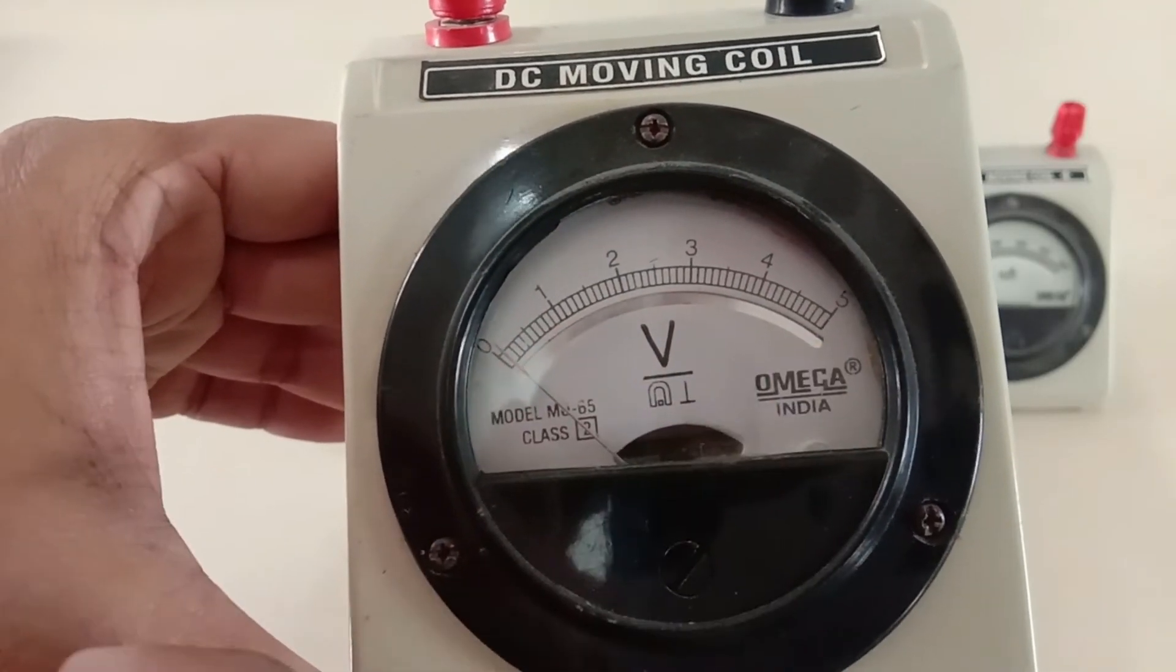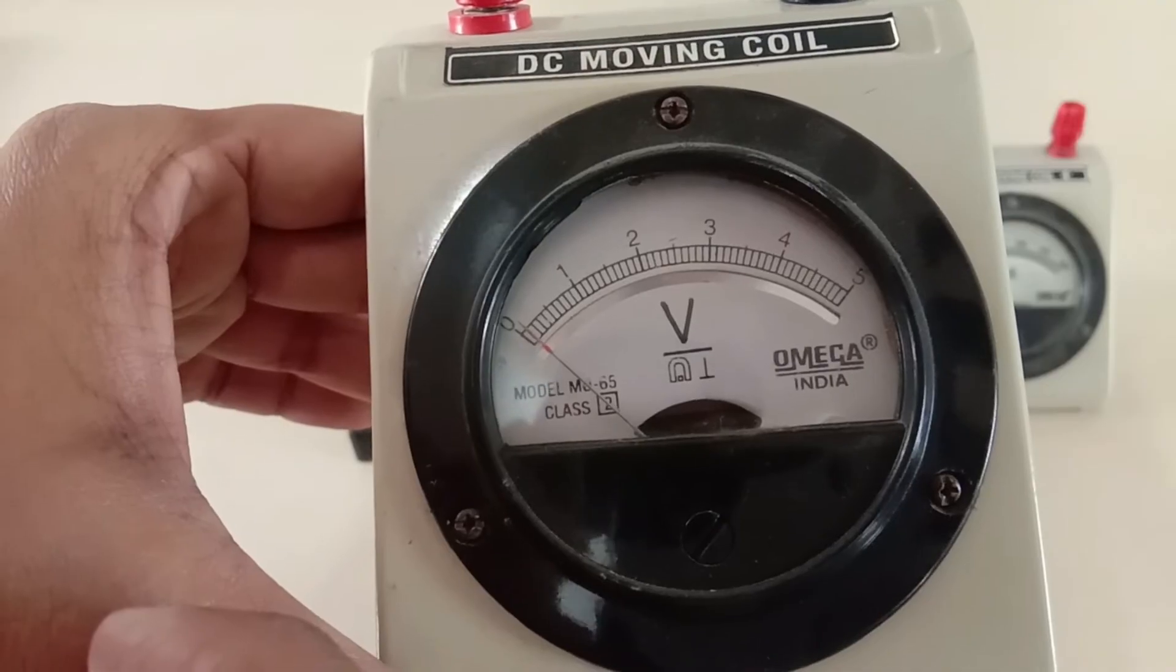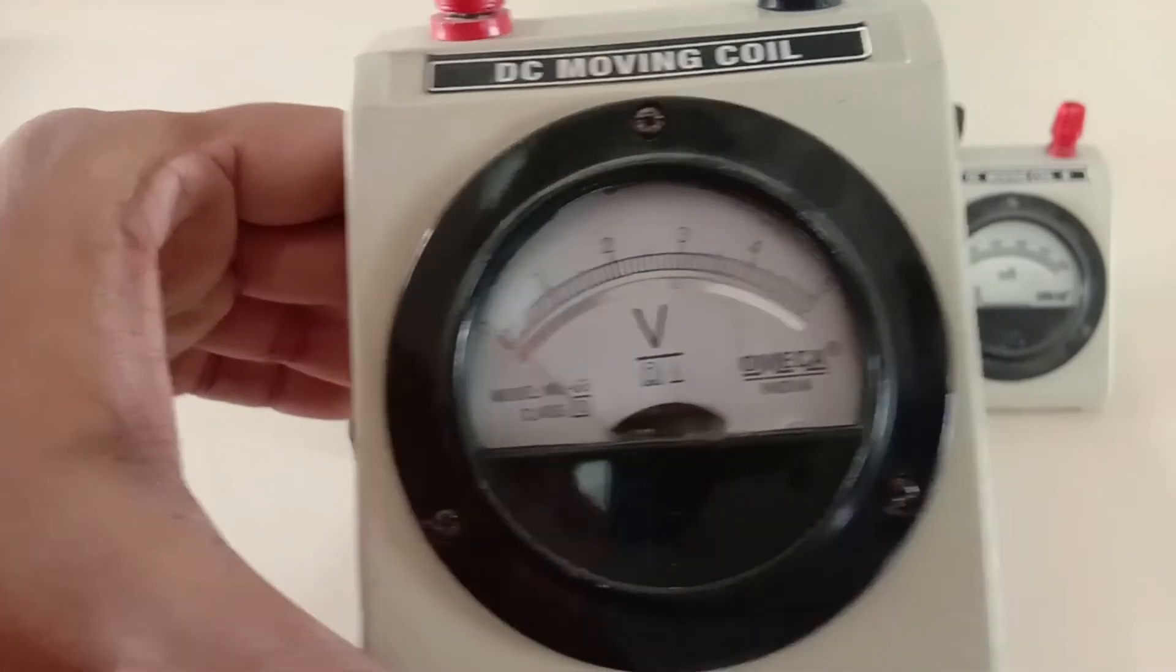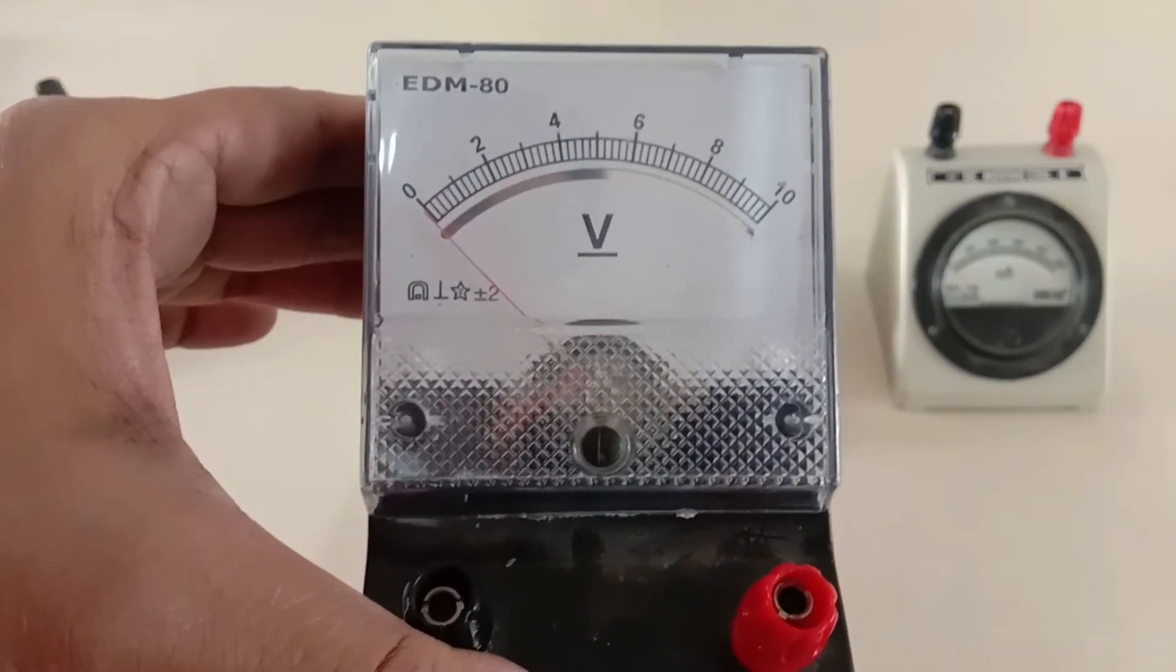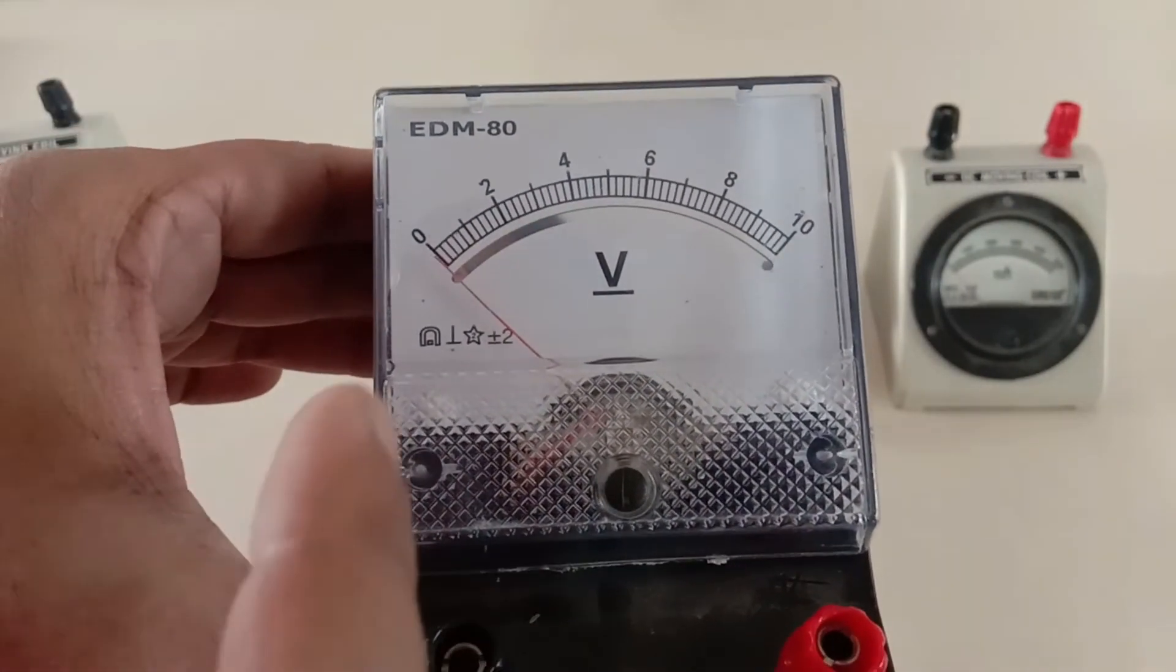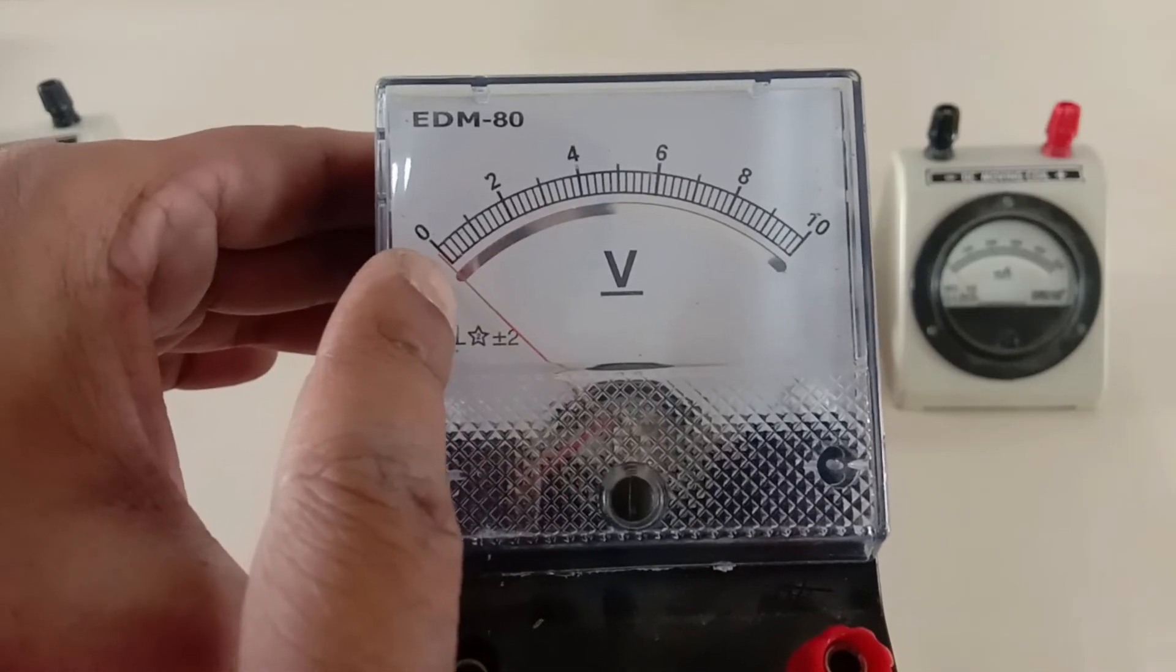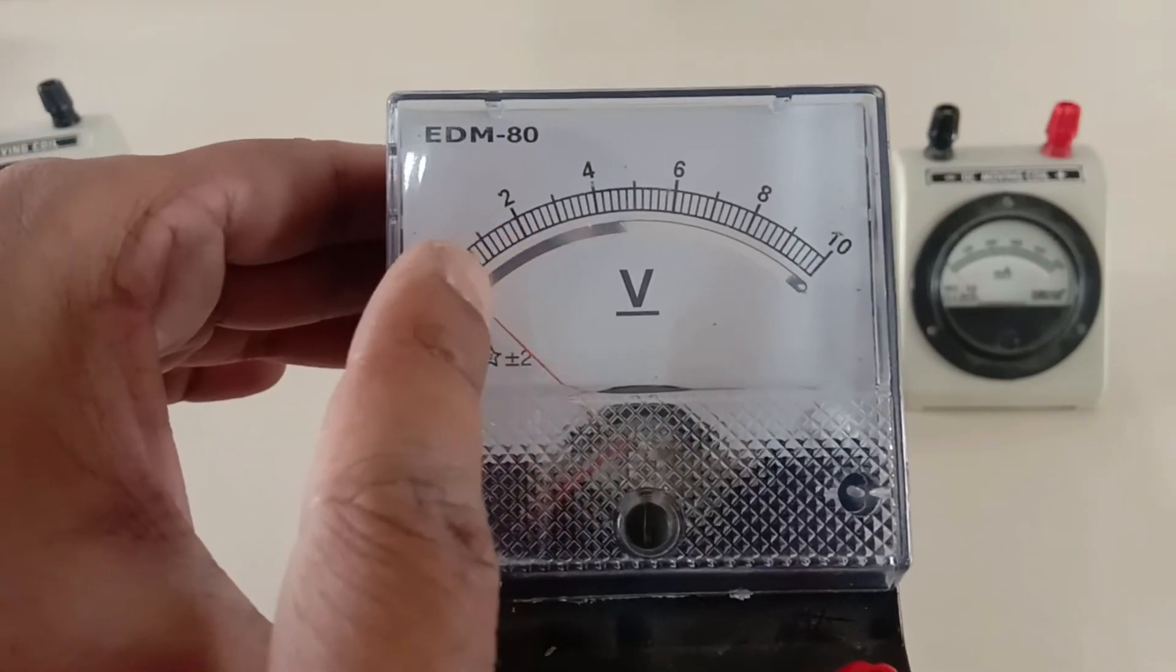One division corresponds to 0.1 volt. This voltmeter can measure up to 10 volts, and between 0 and 2 you can see 10 divisions, so one division is 0.2 volts.